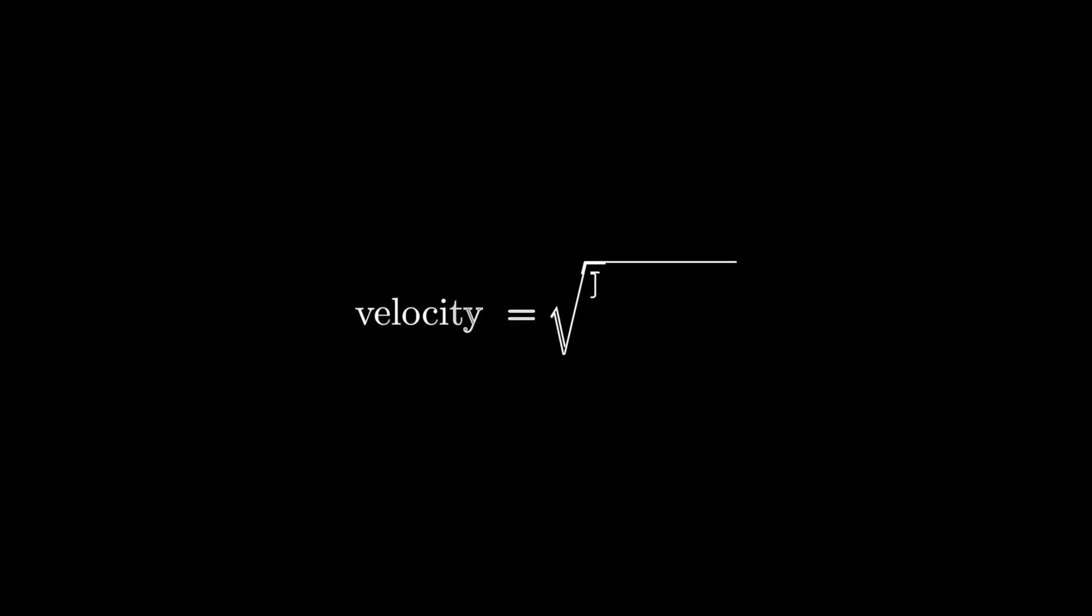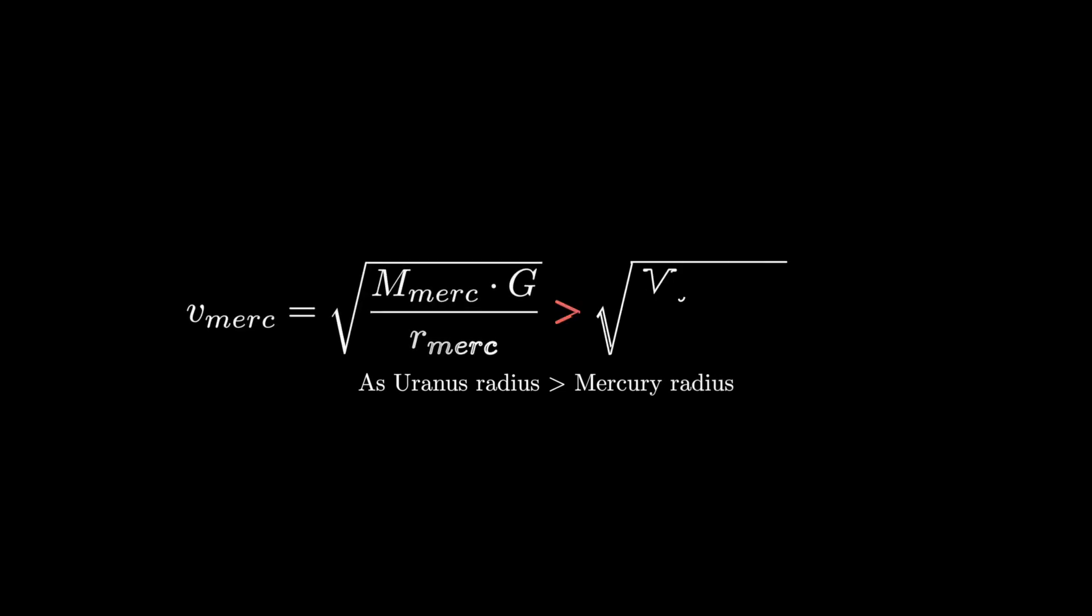The rotational velocity of a planet in our solar system is given by the following formula. Mercury's orbital radius is smaller than that of Uranus, so we are dividing by a smaller value, thereby giving a greater orbital speed.